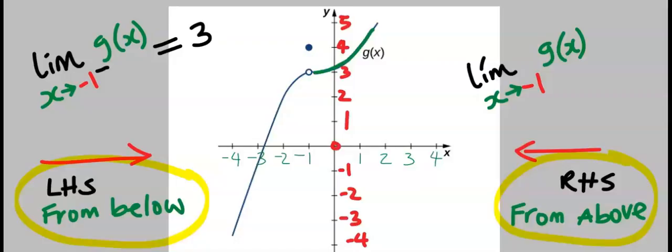which is also called from above, we are going to approach this point where g of x from the right is also equal to 3.